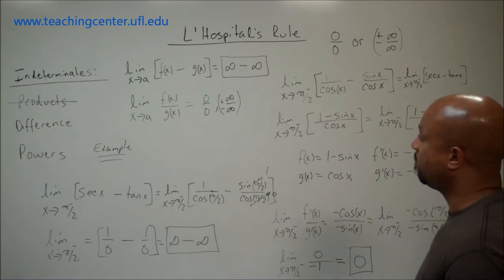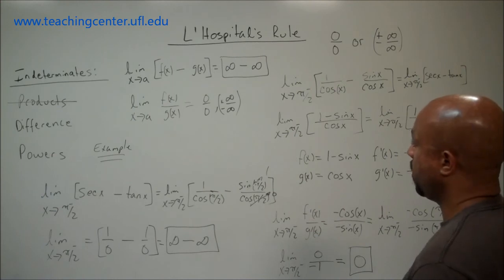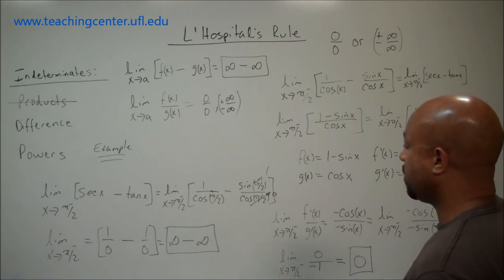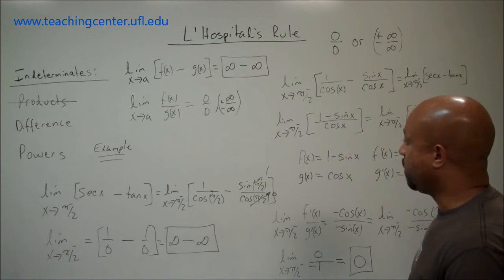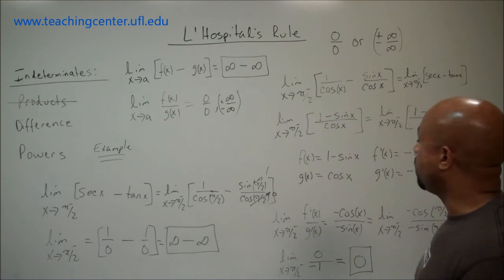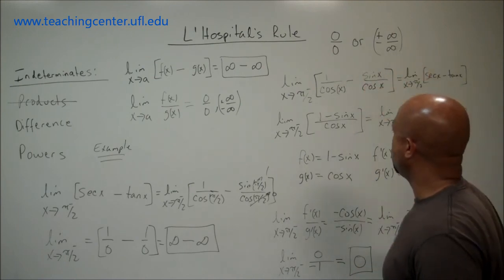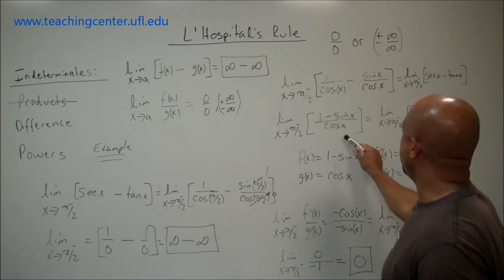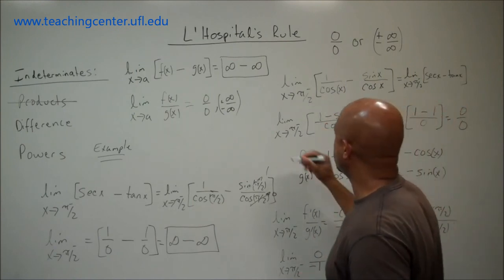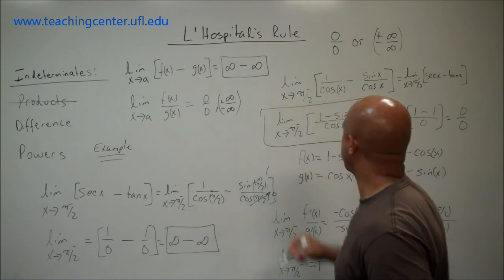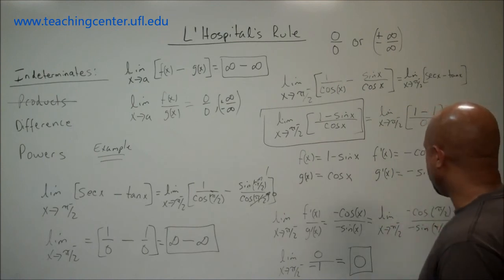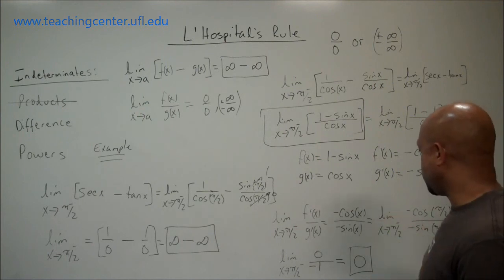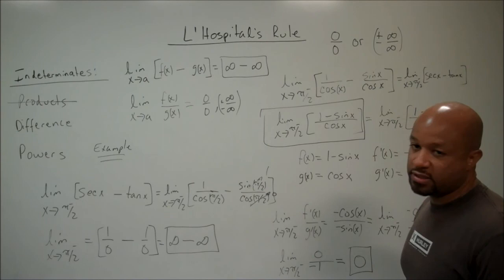This is an example of the indeterminate difference form, where originally when we tried to evaluate the limit we got infinity minus infinity. We wanted to rewrite that to get a fundamental indeterminate form of 0 over 0 or plus or minus infinity over infinity, which we achieved. Our rearranged limit gave us 0 over 0, allowing us to apply L'Hôpital's rule, and when we evaluated the resulting limit we got an answer of 0.